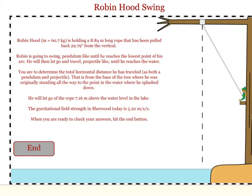In this program, you want to try and determine Robin's landing location. He will swing from a rope or a vine, hit his lowest point, and then become a projectile and land in the water.